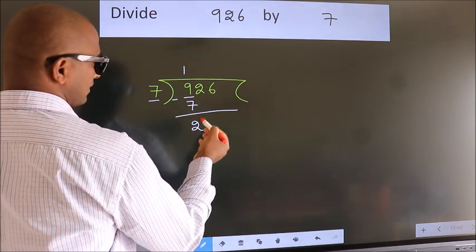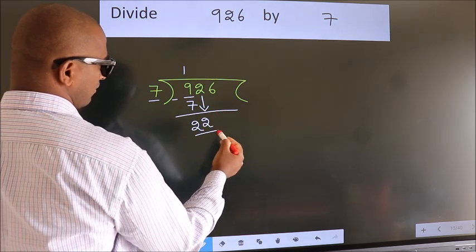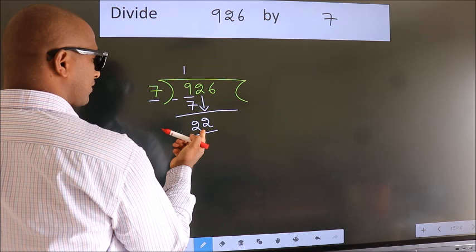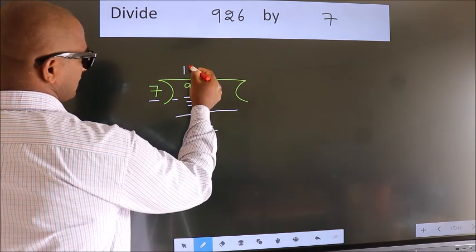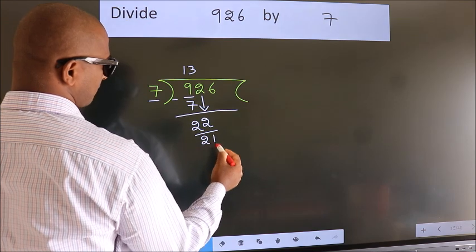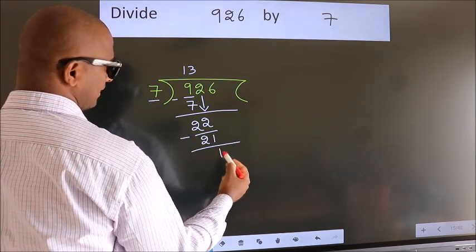After this, bring down the beside number. Bring the 2 down. So 22. A number close to 22 in the 7 table is 7 times 3 is 21. Now we subtract. We get 1.